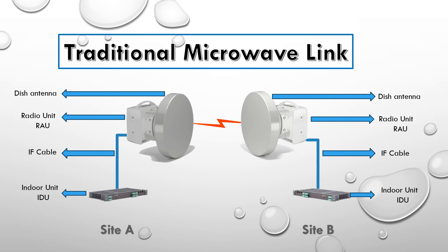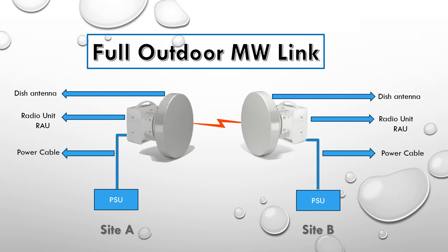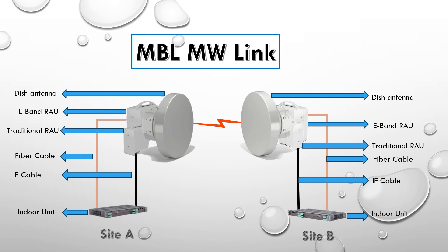Now there are different types of microwave links. First, the widely common use is a traditional microwave link or the split mount. In this type, the link is installed using microwave dish antennas, ROUs, IF cables, and IDUs. The second type is the full outdoor microwave link. In this type, the link is installed with only dish antennas and ROUs, with no need for IF cables or IDU units. The third type is MBL — multi-band link — which uses a combination between a traditional node and a full outdoor unit, where the link is installed using dish antennas, IF cables, IDUs, ROUs, and also a full outdoor ROU.